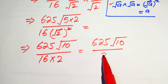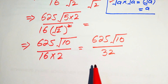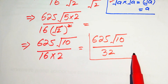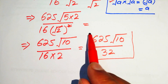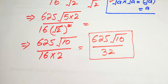So 625 times the square root of 10 divided by 32 is the required simplified form of the given algebraic expression. This is the final answer. Thank you so much for watching this video — please subscribe to my channel for more exciting videos.